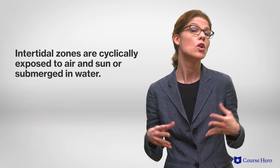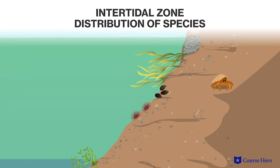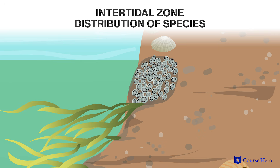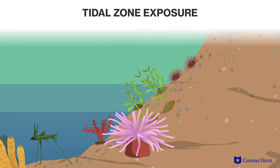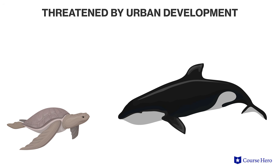Intertidal zones occur at the transition between land and sea. As the tide rises and falls, the intertidal zone is cyclically exposed to air and direct sun or submerging water. Elevated portions of the zone are exposed to air more of the time and lower portions are submerged in water more of the time. As a result, the distribution of species in the intertidal zone is stratified based on each organism's physiological constraints. Algae and seagrass are the primary producers in this biome. Organisms that are able to attach to rocks are common because they can avoid being swept away by the tide. In addition, the tide delivers food, so organisms can remain in one place. Sea anemones, urchins and sea stars are commonly found in intertidal zones. This zone is the marine biome most accessible to humans and as a result, it is greatly affected by pollution and urban development.